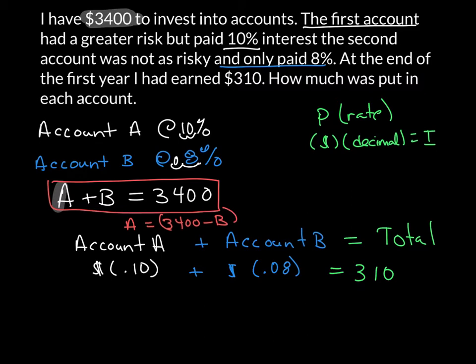Now I just have everything that I need. I'm going to plug that in right there. So now I know that $3,400 minus B times 0.10. I know that looks really weird, so we're not going to put it at the end. We're going to move that to the front, because otherwise that's going to look really strange when I go to distribute. And for account B, just call that B times 0.08, all equal to 310.